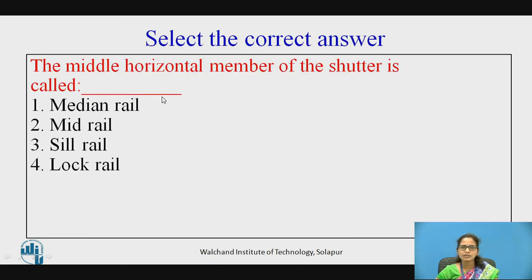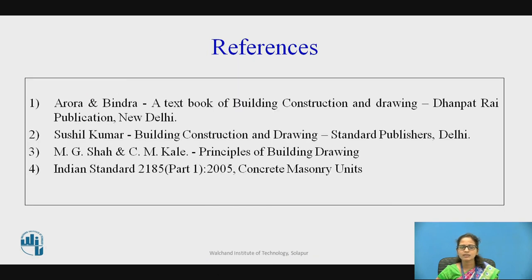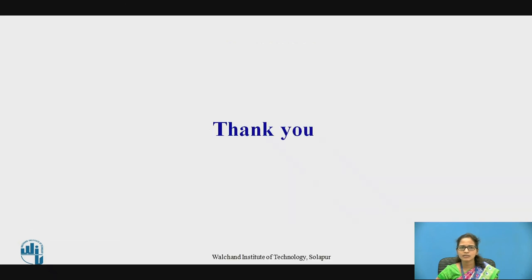Here are the MCQs. The middle horizontal member of the shutter is called: first, median rail; second, mid rail; third, sill rail; fourth, lock rail. The answer is lock rail. These are the references. Thank you.